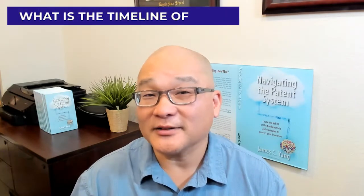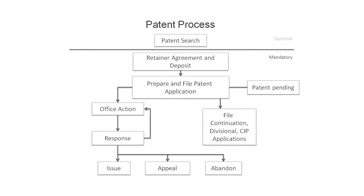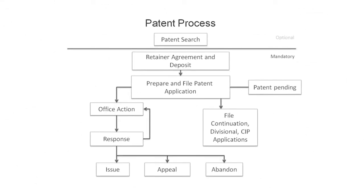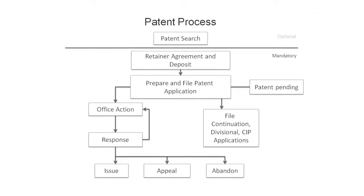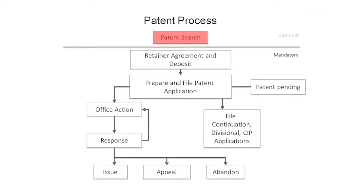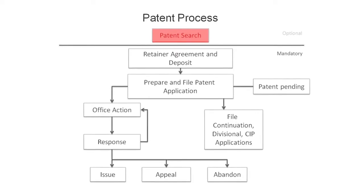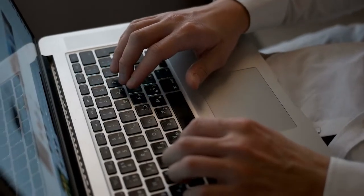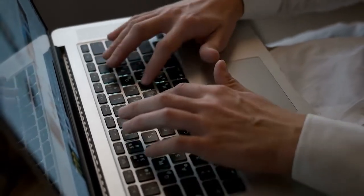What is the timeline of the patent process? The timeline is shown in this flow chart. The patent process starts with a patent search, which is an optional step. I don't recommend paying for a patent search with a patent attorney, at least not until you've done some searching on your own.